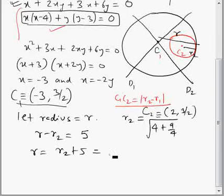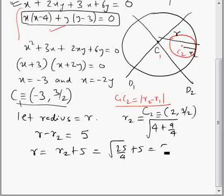So the center of the required circle is (−3, 3/2) and the radius is 15/2. Using these, we can find the equation of the required circle.